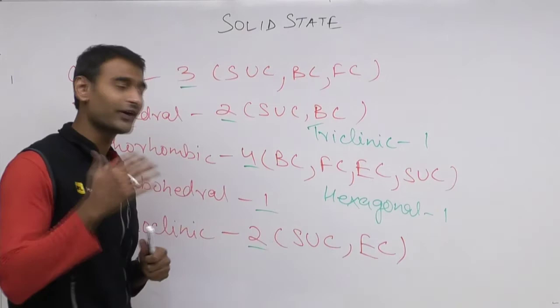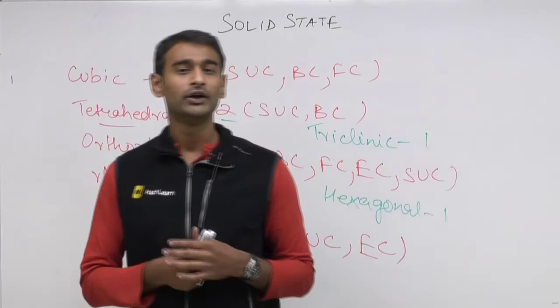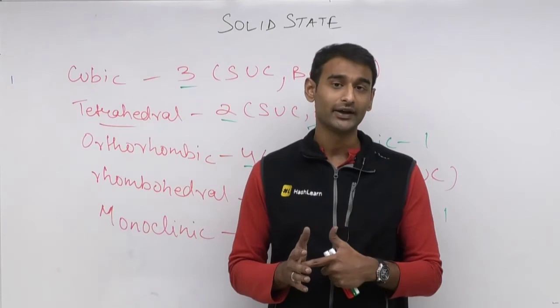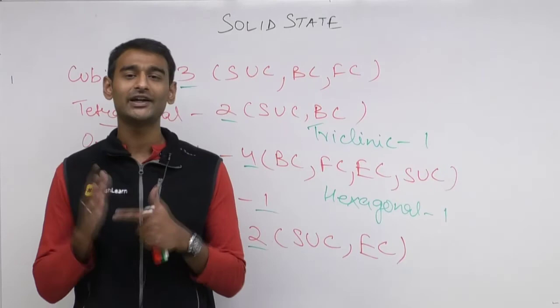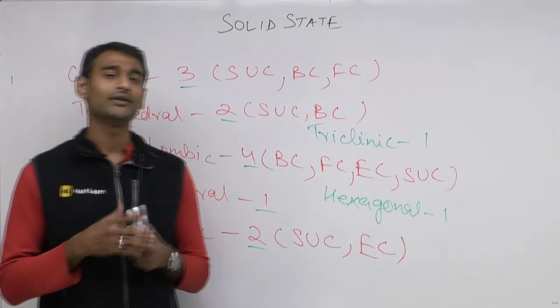The 7 crystal systems are: cubic, tetragonal, orthorhombic, rhombohedral, monoclinic, triclinic, and hexagonal. The most symmetrical is cubic — all sides equal and all angles 90 degrees. The least symmetrical is triclinic — none of the sides are equal and none of the angles are equal to 90 degrees.